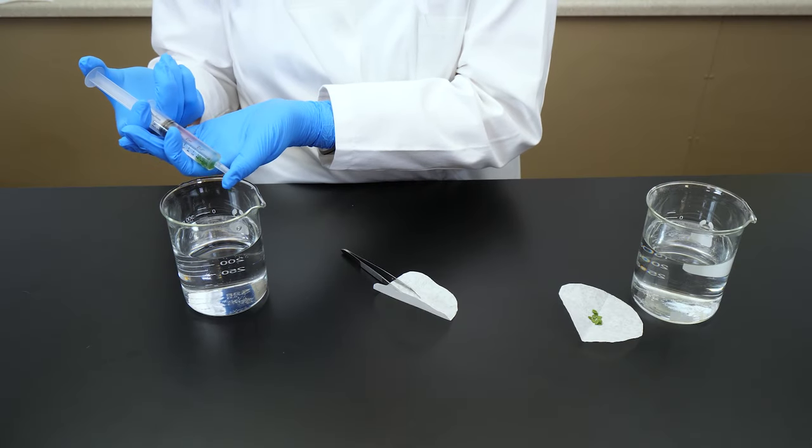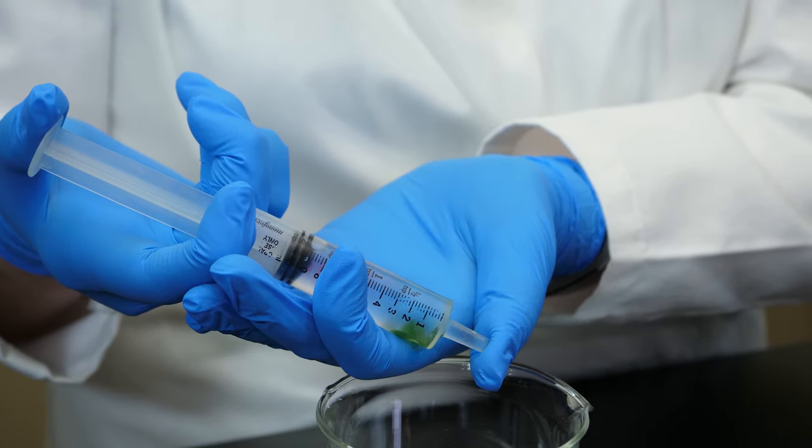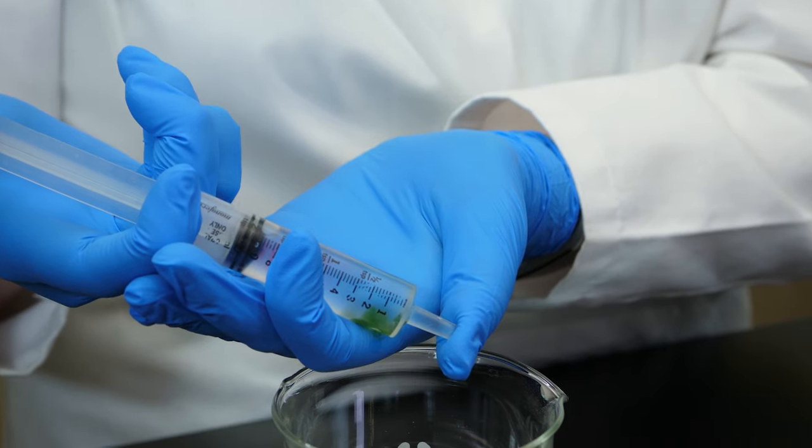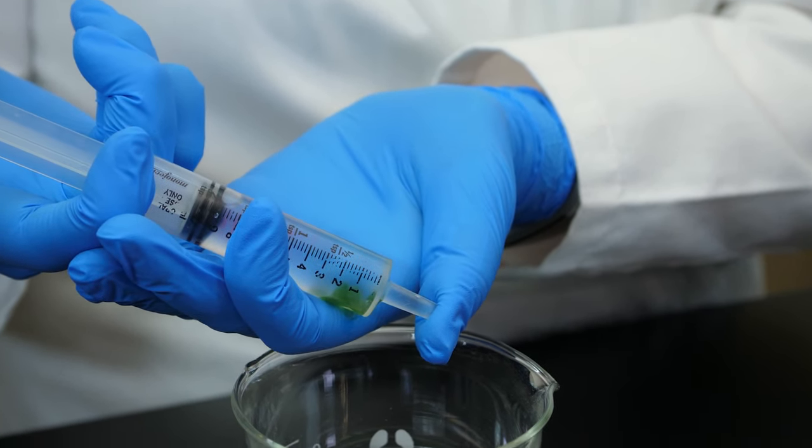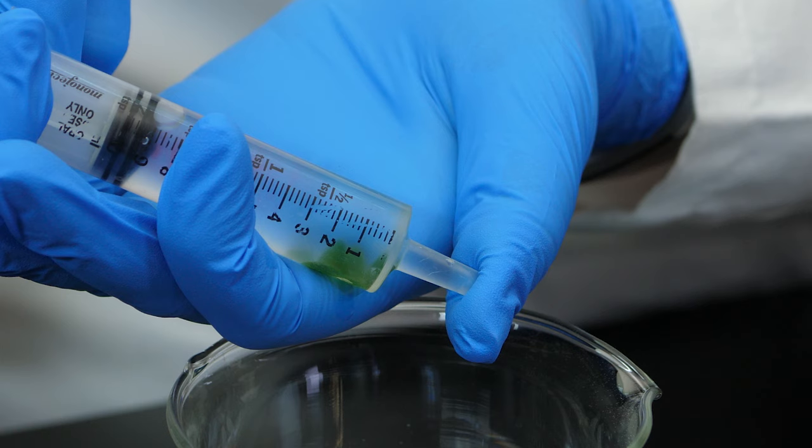While still holding the tip of the syringe closed, we depress the plunger to force some of the sodium bicarbonate solution into the leaf chads. This will ensure the chads get a sufficient supply of carbon dioxide.